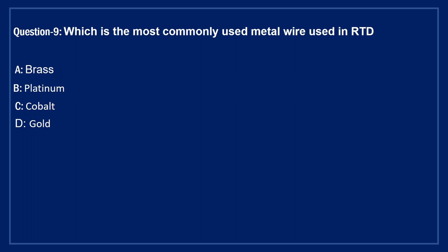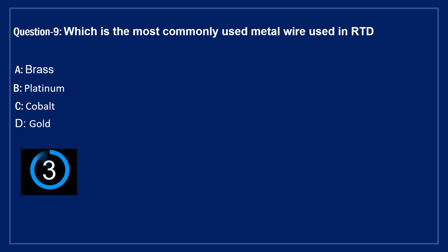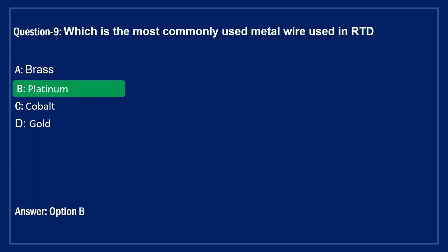Next question: which is the most commonly used metal wire in RTD? Option A: copper. Option B: platinum. Option C: cobalt. Option D: gold. The right answer is Option B, platinum. Yes friends, platinum is the most commonly used metal wire in RTD.